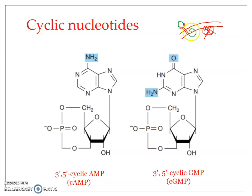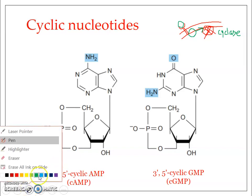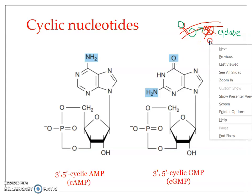This receptor is known as a G-protein coupled receptor. A G-protein is associated with it, and these G-proteins are connected with the cyclases — the enzymes which synthesize the cyclized purine nucleotides. When the hormone binds to this G-protein coupled receptor, it triggers a series of actions that finally end in the activation of the cyclase enzyme. Until then, the cyclase enzyme is not active.